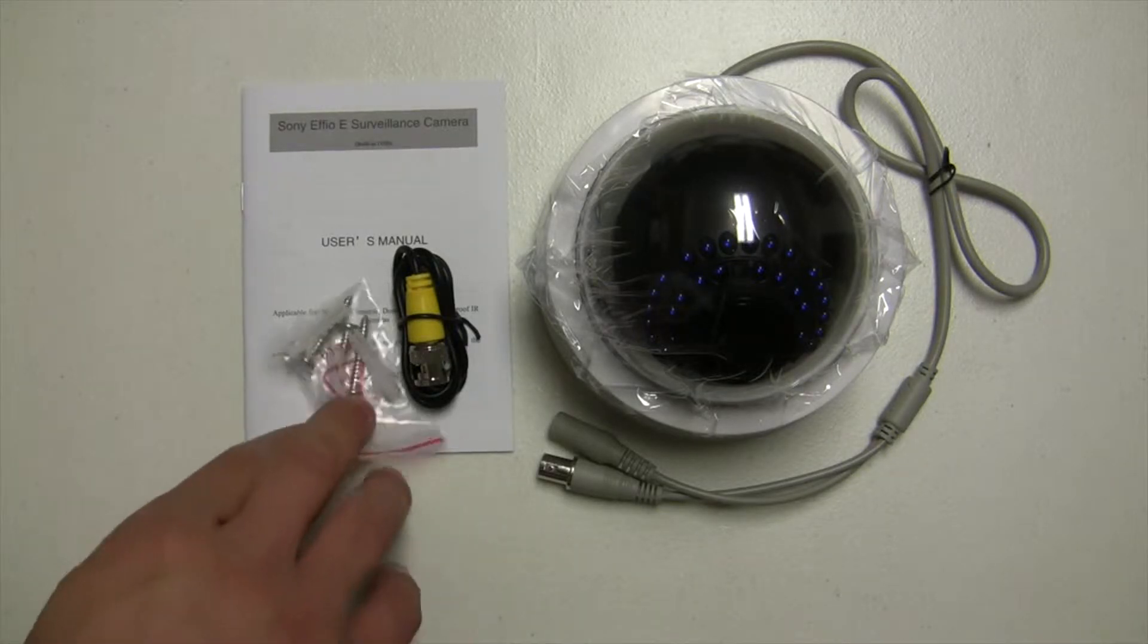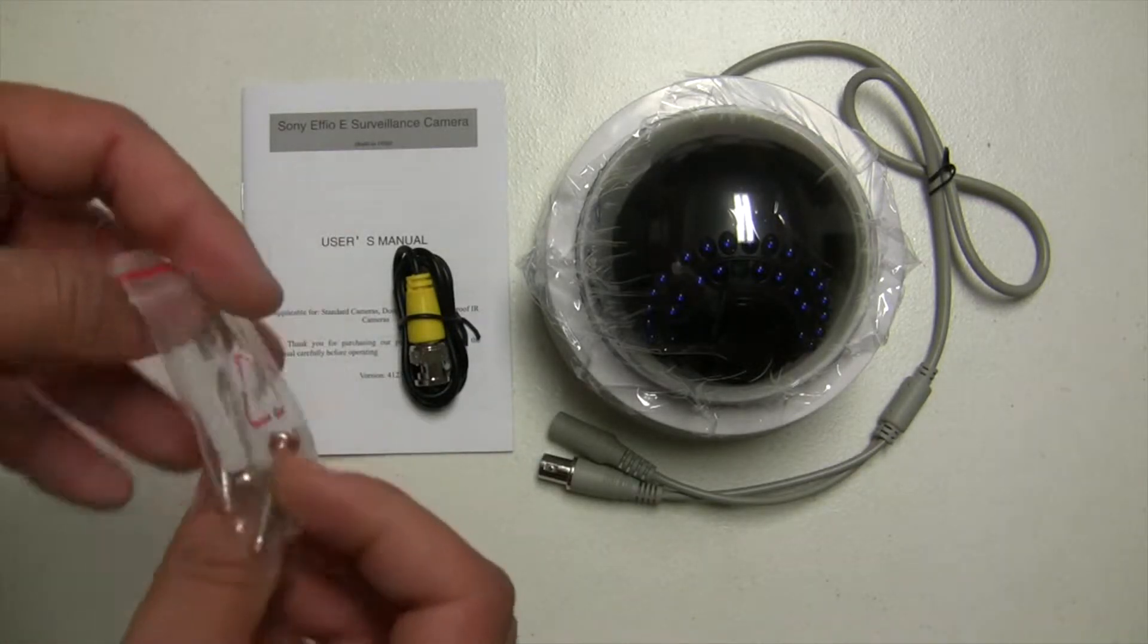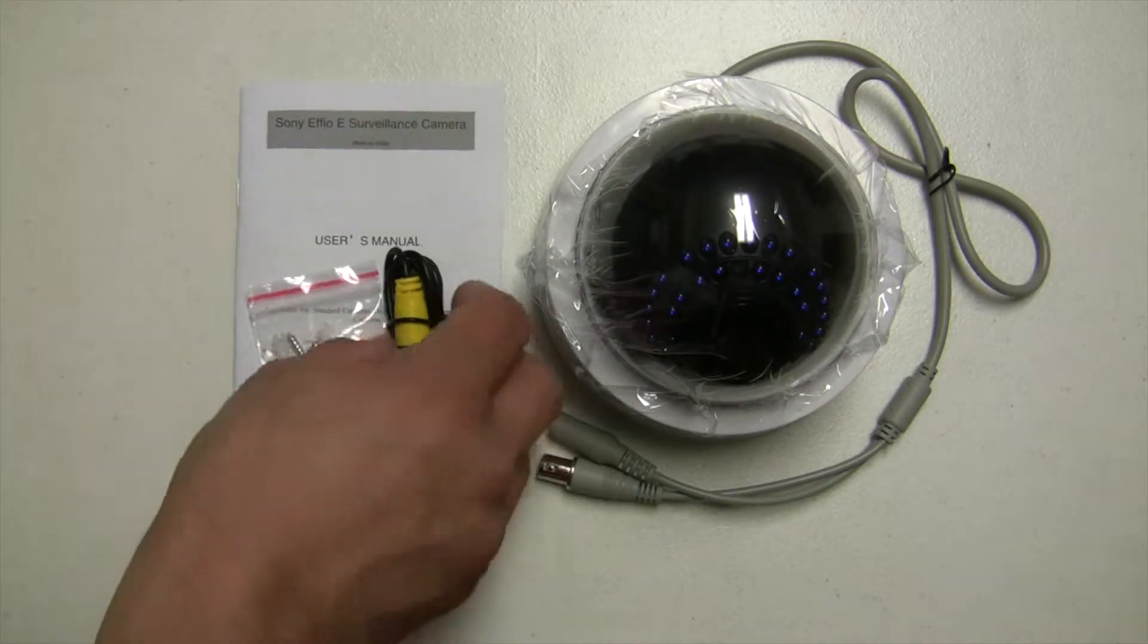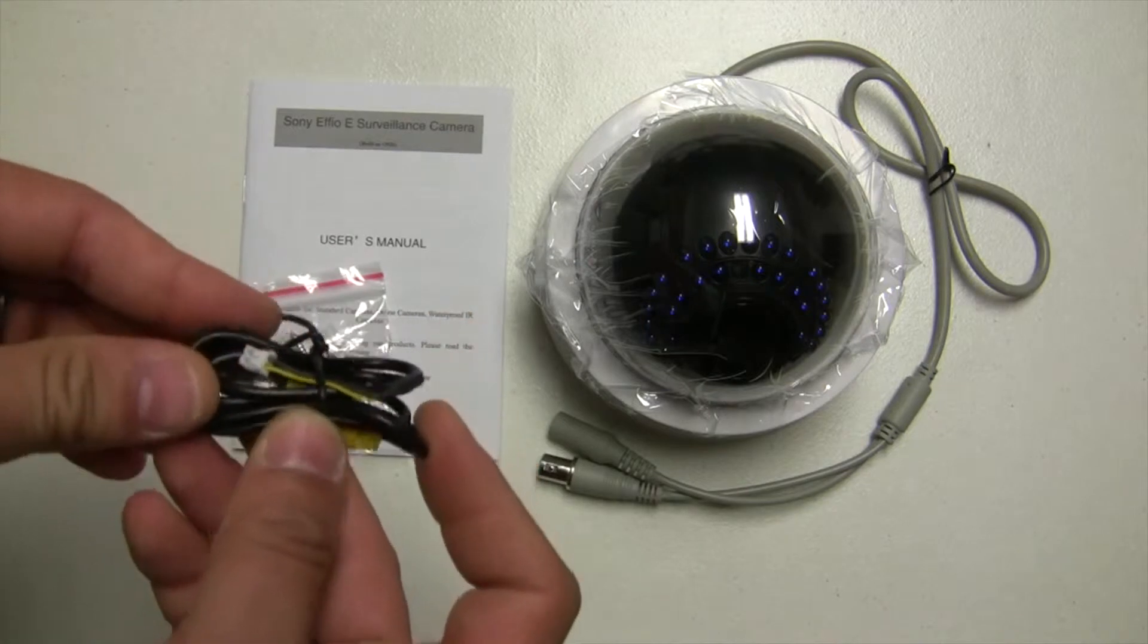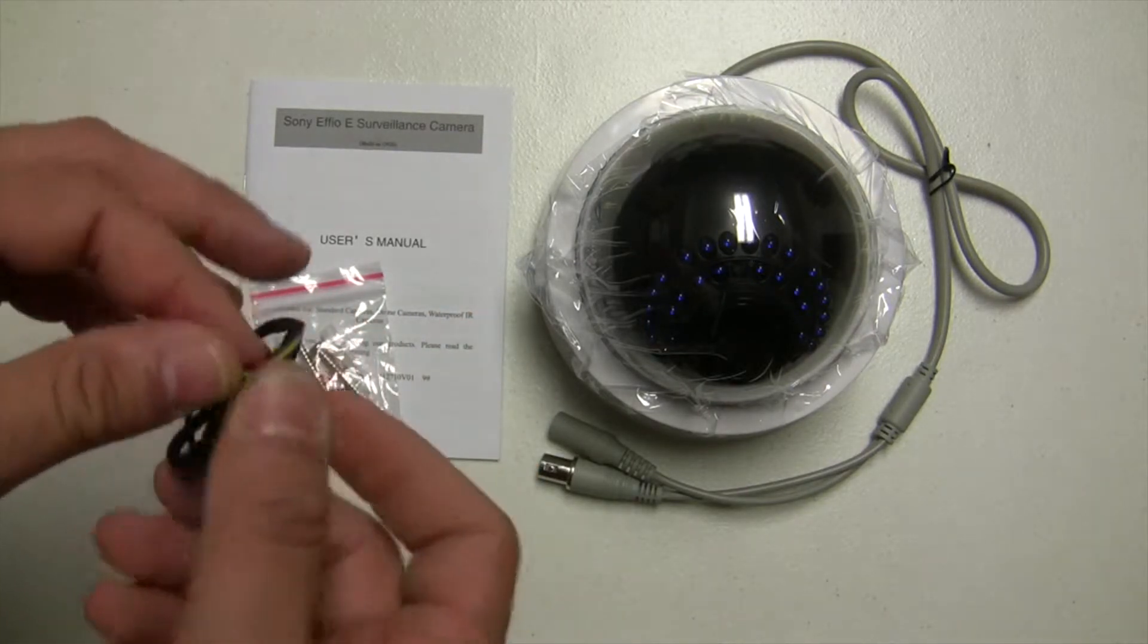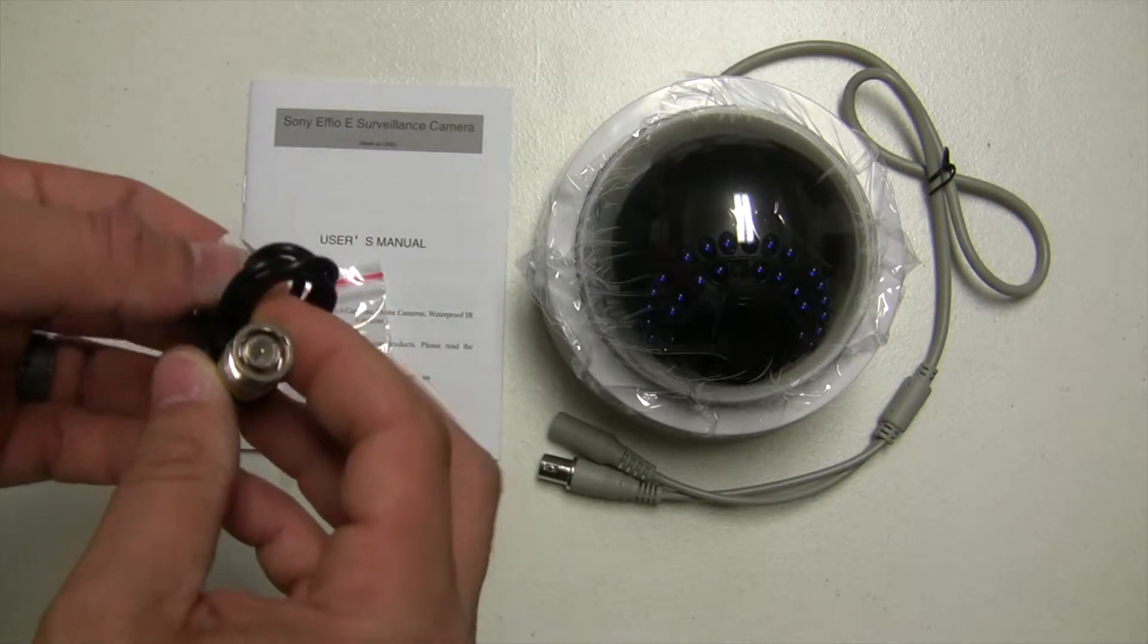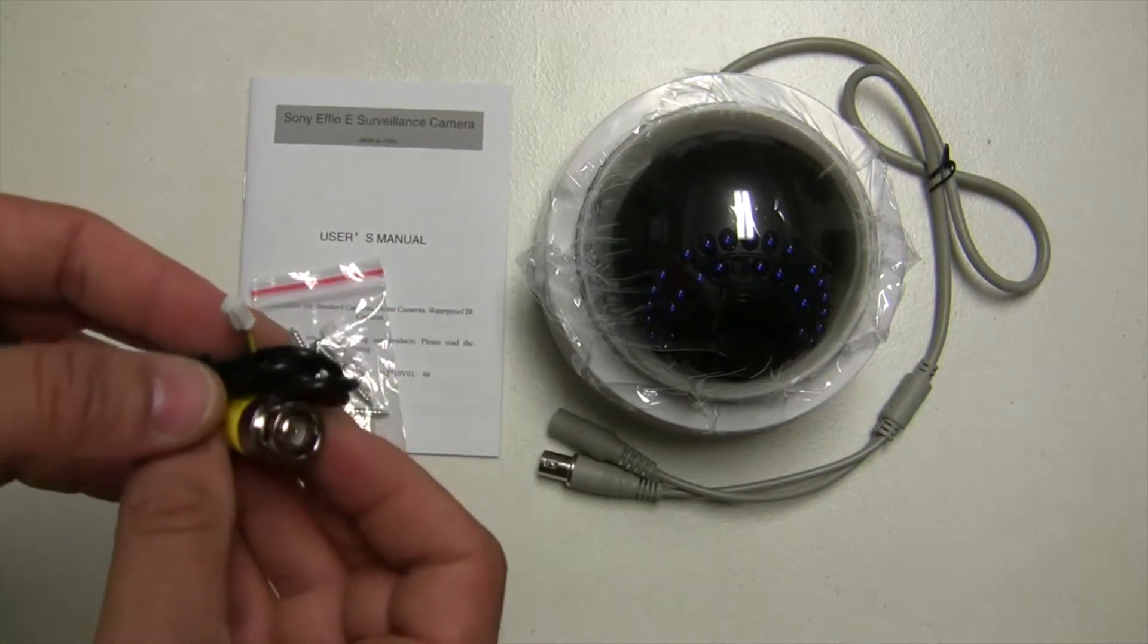Inside the box you can find the mounting screws. There is no key necessary to open the camera itself. This is a service cable that you will use. You connect it inside the camera and then you can use a handheld monitor or a video tester to adjust the focus and zoom.